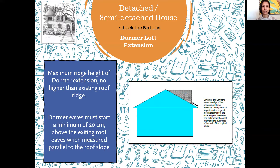Now let's talk about eaves. The dormer eaves are the lowest point of your sloping roof. If the blue box is your original house, that point is the lowest point of your sloping roof, and the gray box is the dormer you would like to insert. The distance between the two points should be 20 centimeters — 0.2 meters or 200 millimeters — measured parallel to the roof slope, as shown by the black arrow.